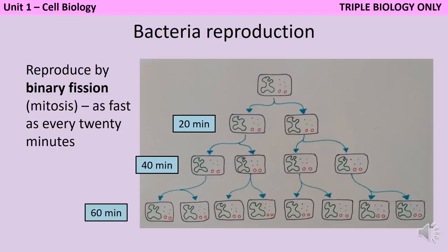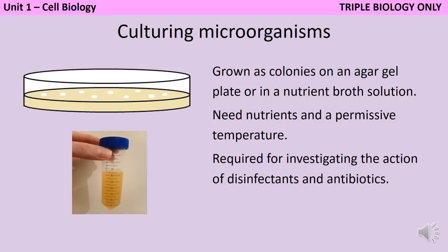You may be given a maths question asking how many bacteria will be present after a certain amount of time or number of generations, or how long it takes for a certain bacterial population to arise. Bacteria can be cultured as colonies either in a petri dish filled with agar jelly and LB nutrient broth — containing glucose, amino acids and other nutrients — or in a tube of the same broth. In both instances the bacteria need sufficient nutrients and a permissive temperature; for example, in industry we culture E. coli at 37 degrees. These bacteria can then be used for investigating the action of disinfectants and antibiotics in the required practical.